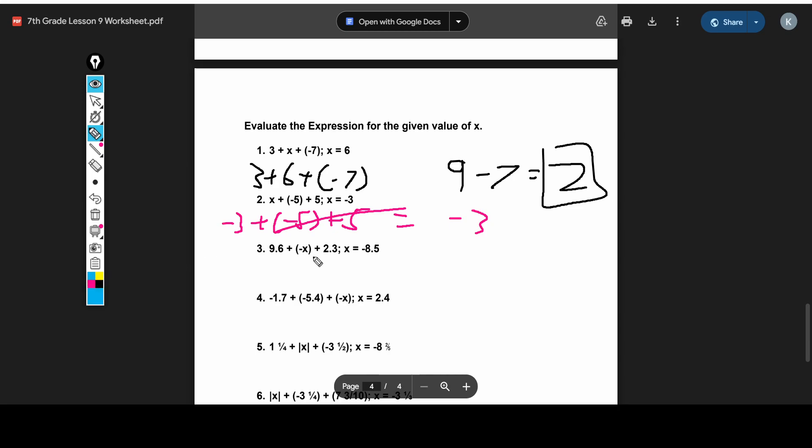And then we have 9.6 minus X plus 2.3. And X is negative 8.5. So you substitute in. And you have negative, and then we put in X. So X is negative 8.5. So you have a negative and another negative. And then we add 2.3. So these two negatives, they cancel out. Two negatives cancel out to a positive. So you end up with something like 9.6 plus 8.5 plus 2.3. And if you do that math, you'll end up with, let's see, you'll end up with 20.4.